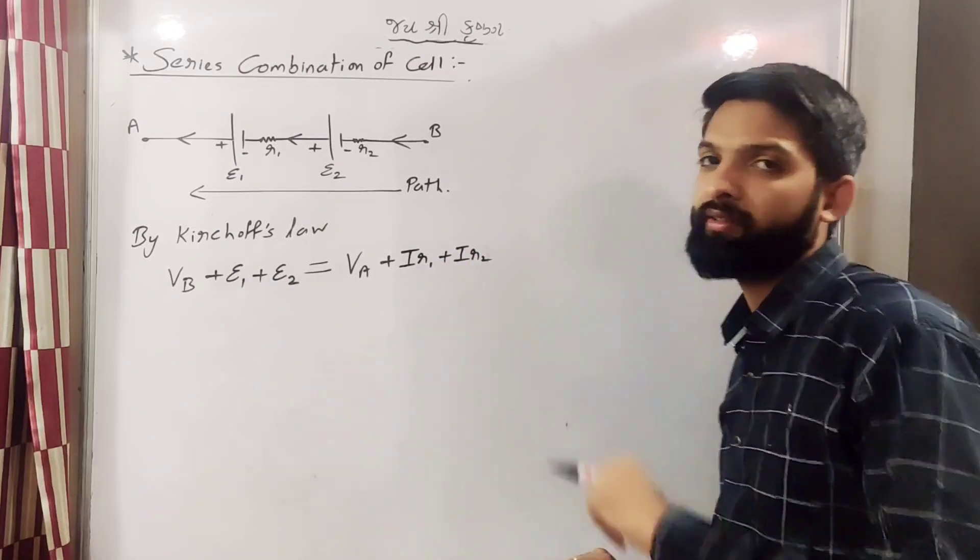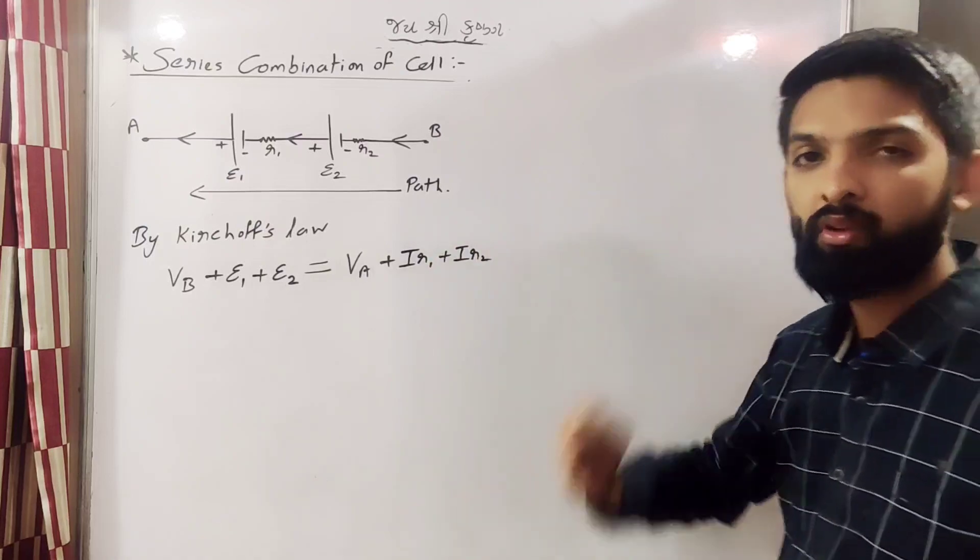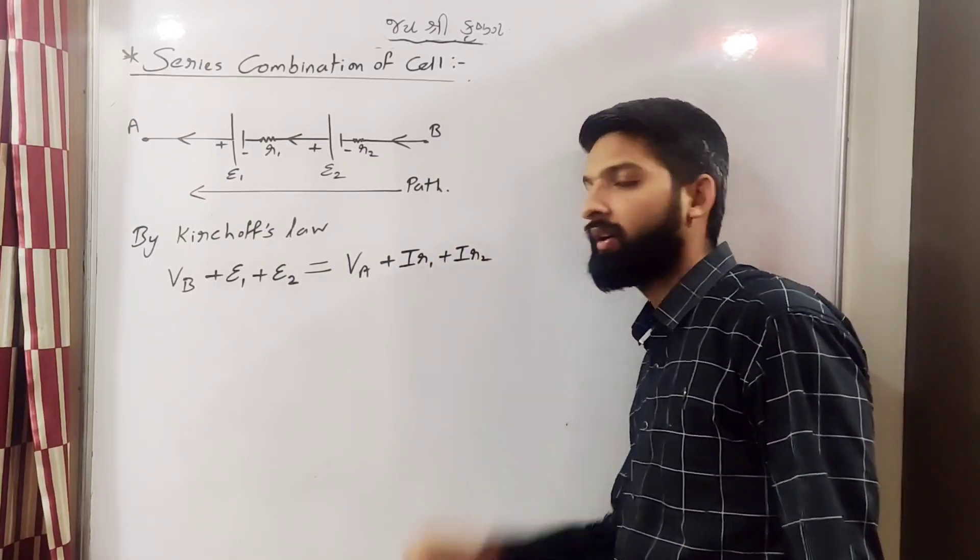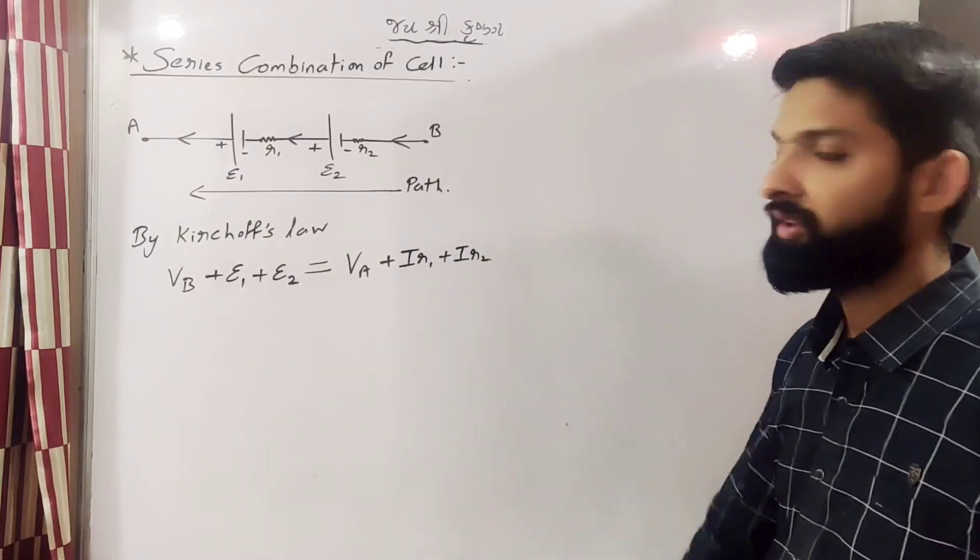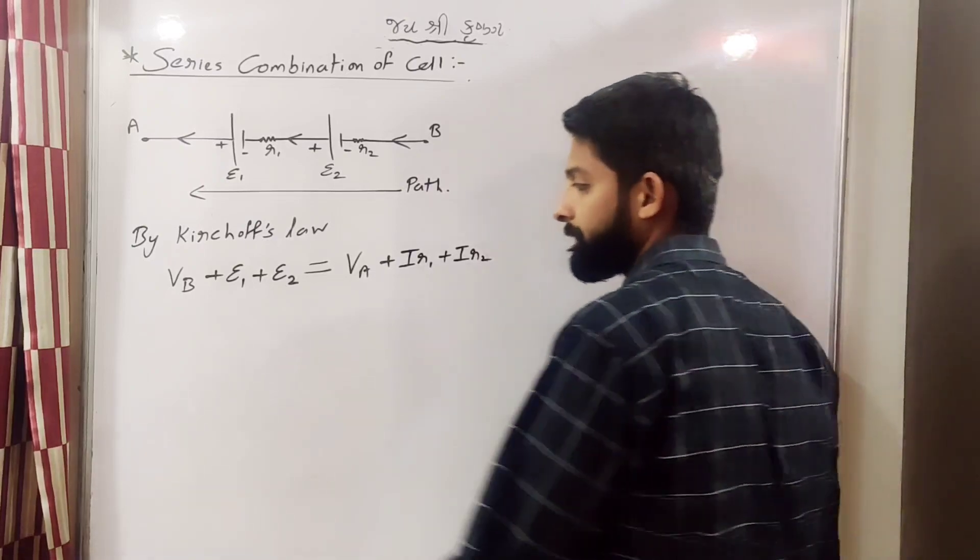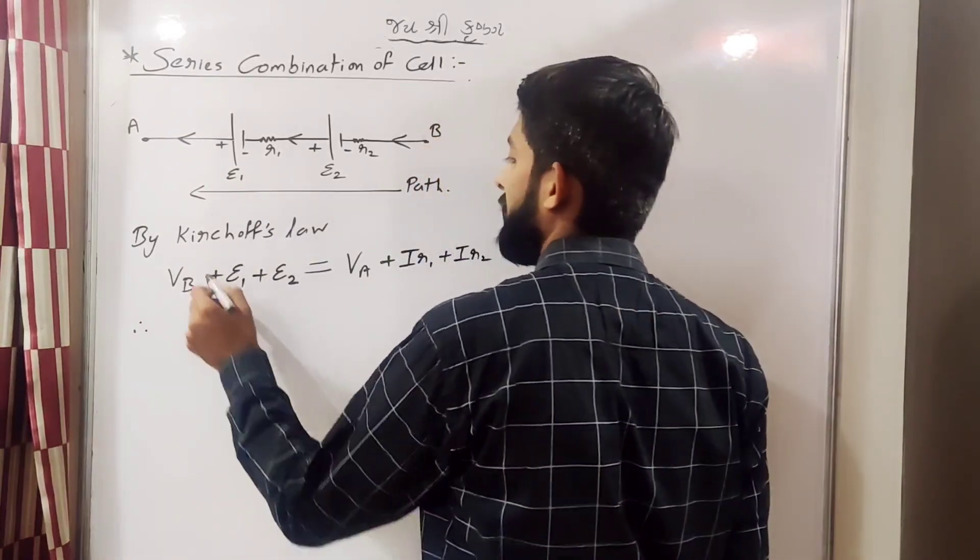Potential that is IR. So here potential drop IR1 and IR2. So this type of equation, so here VB transfer.